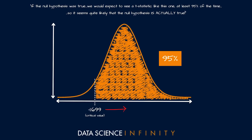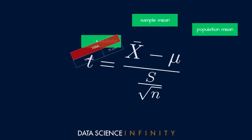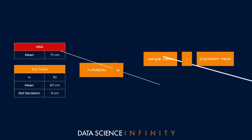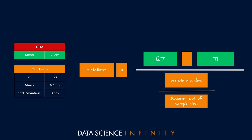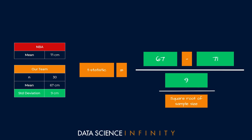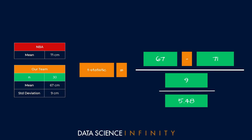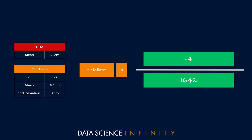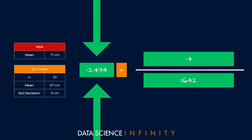So let's actively run our t-test formula and get the resulting t-statistic. Rewriting the formula to make it easier to follow and inputting our data: we have our sample mean of 67 centimeters, our population mean of 71 centimeters, our sample standard deviation of 9 centimeters, and the square root of our sample size of 30, which is 5.48. On the top, 67 minus 71 is negative 4. On the bottom, 9 divided by 5.48 equals 1.642. Our t-statistic is therefore negative 4 divided by 1.642, giving a value of negative 2.434.